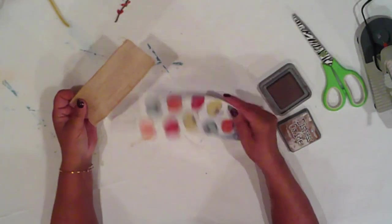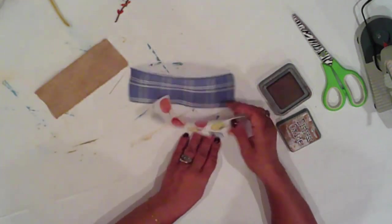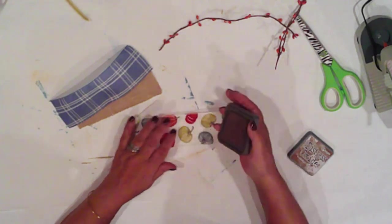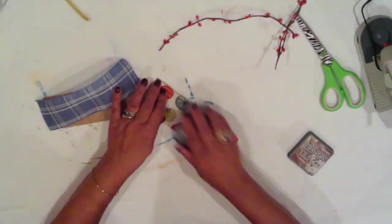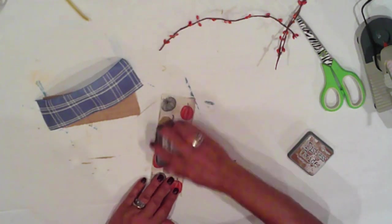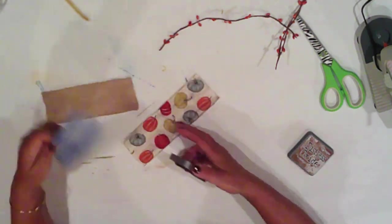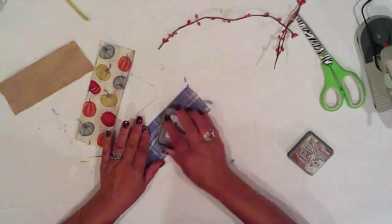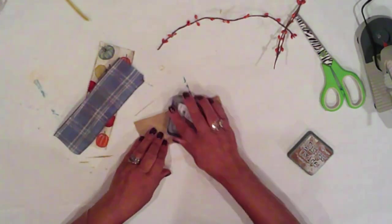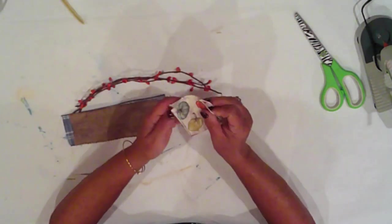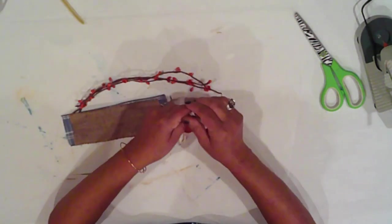I've cut three different ribbons a few inches long and I'll distress them with some ink. I'm just rubbing my ink pad all along my ribbon. And I'll dovetail them.